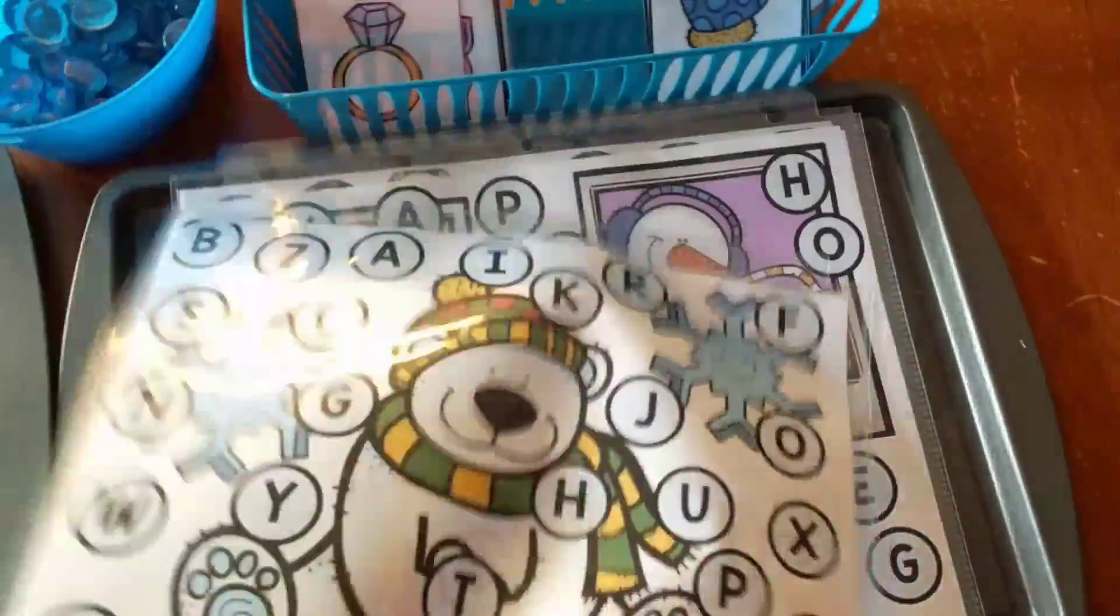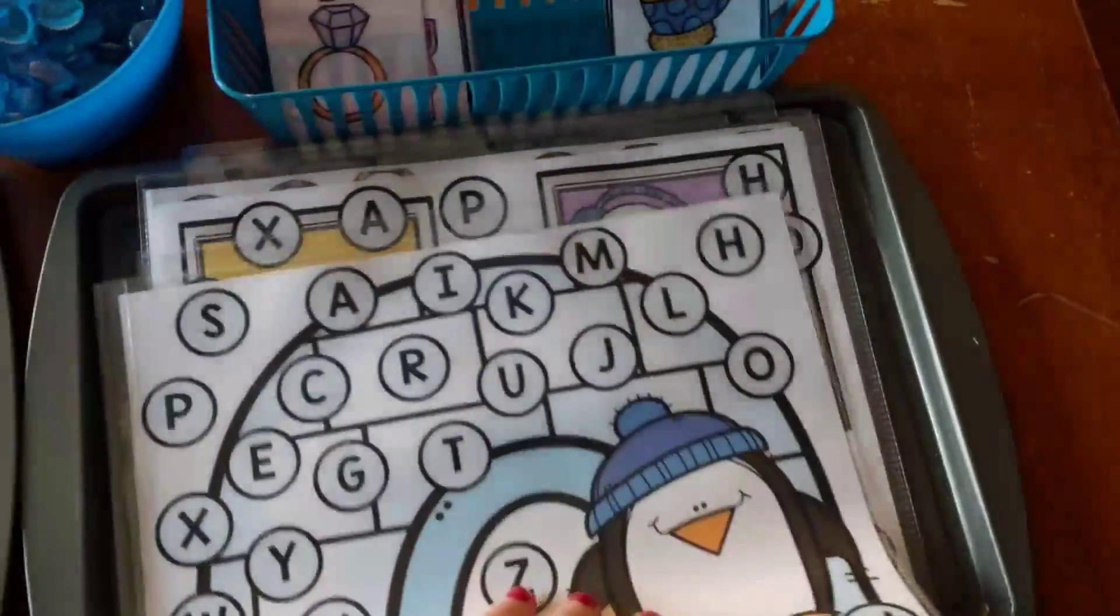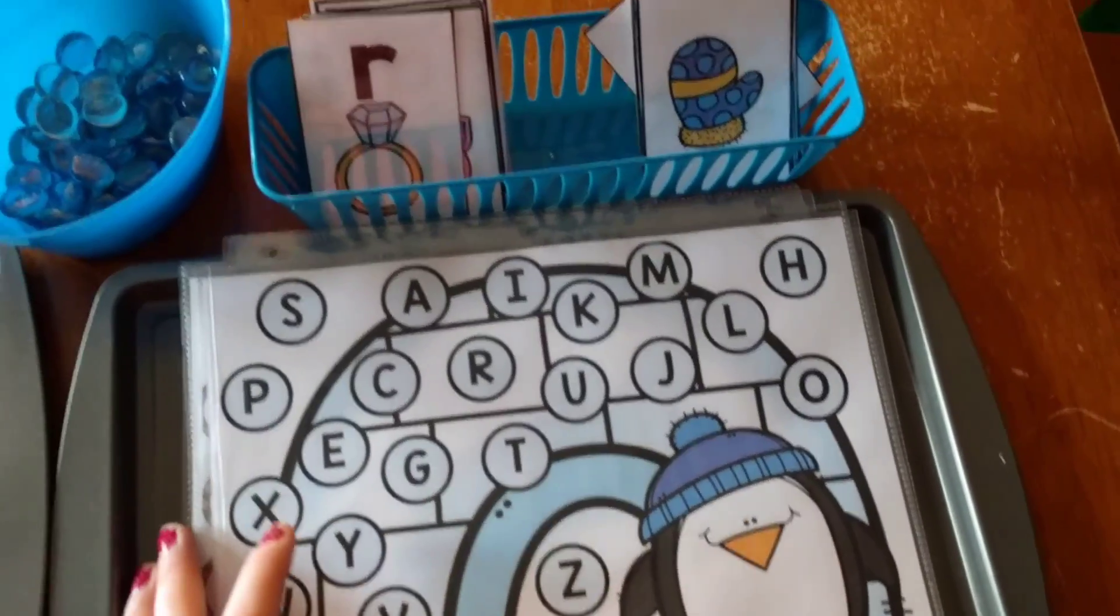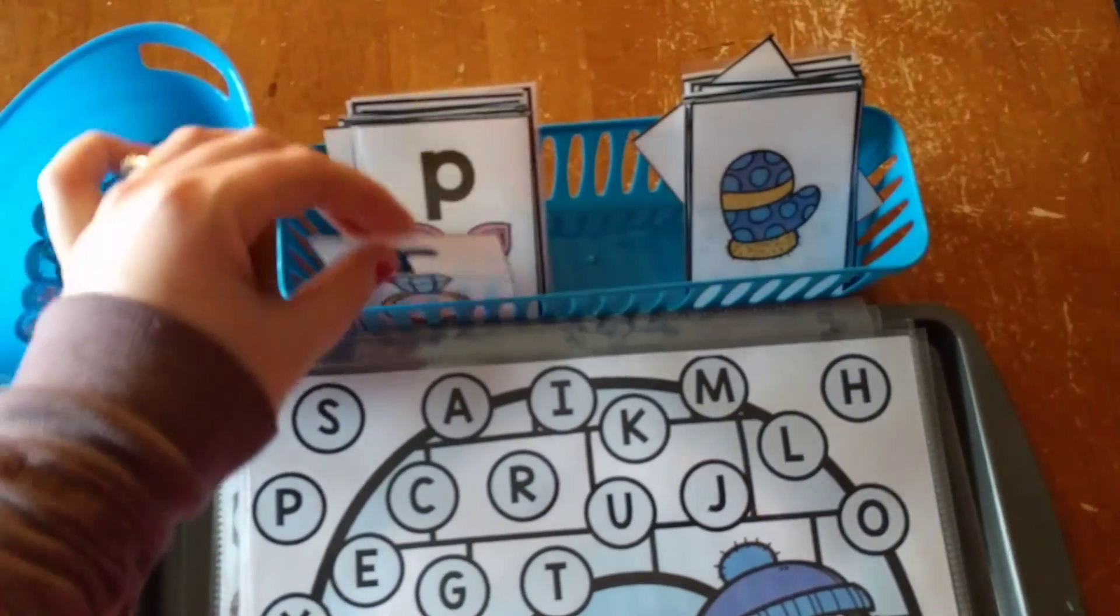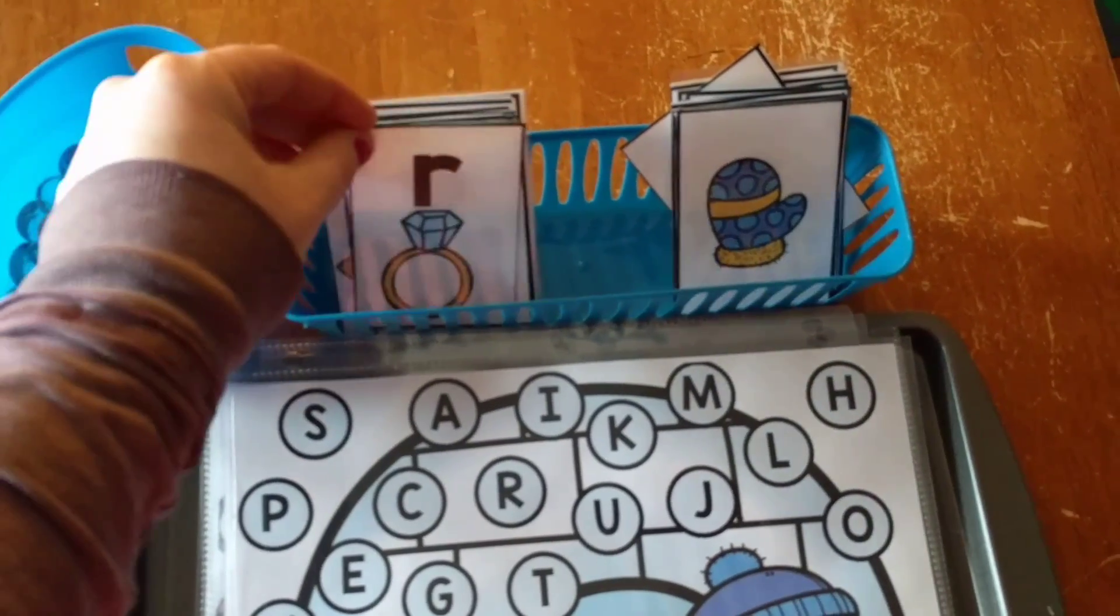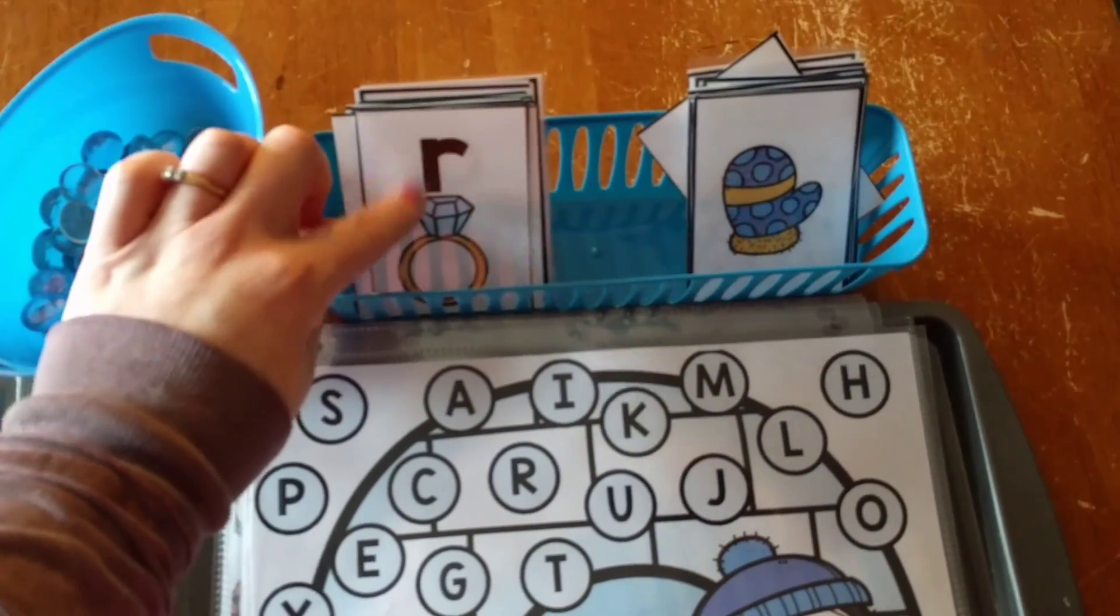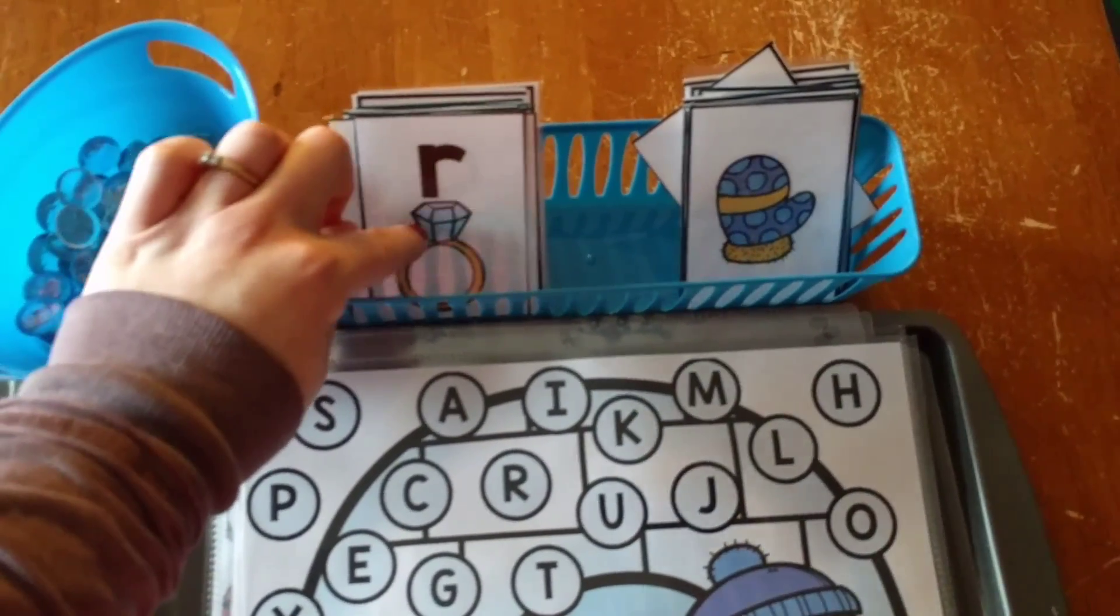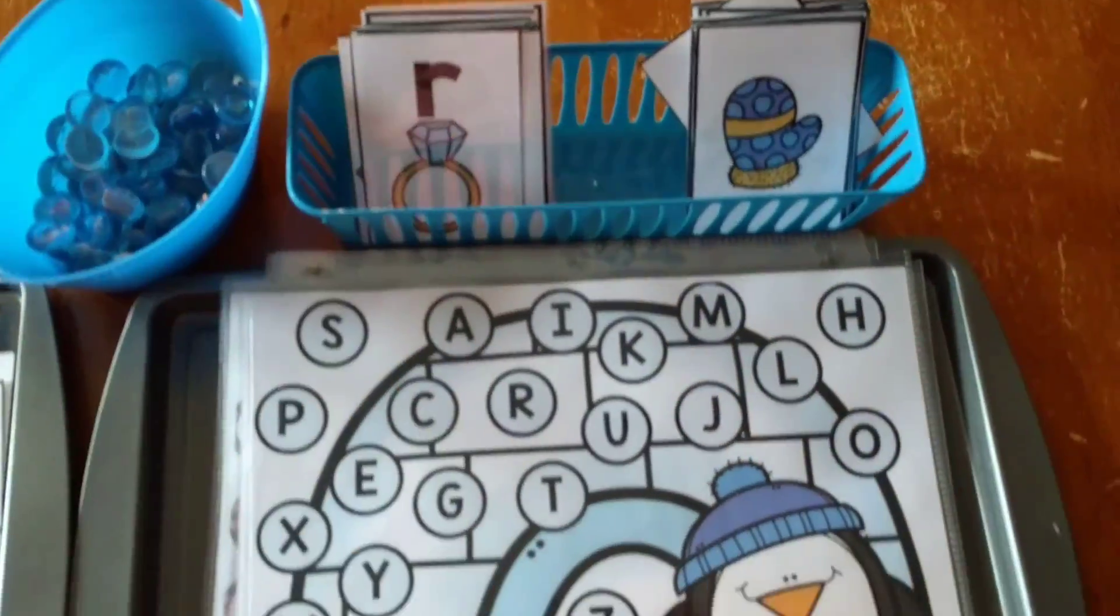All right, with the first few mats that look like this, that have the capital letters on them, what they're going to do is they are going to use the cards with the lowercase letters, and they're going to match. So he's going to pick a card, meaning the first card is R, and I will say R, R, R, ring. R says R, R, ring. Can you find capital R?